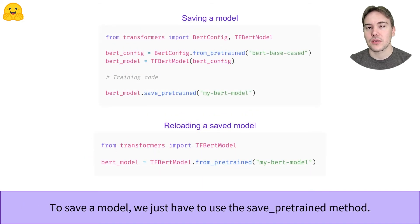Saving a model once it's trained or fine-tuned is very easy. We just have to use the save_pretrained method. Here, the model will be saved in a folder named my-bert-model inside the current working directory.